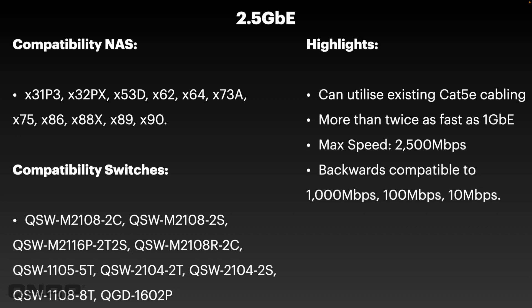One of the best things about 2.5 gig is it can utilize existing Cat5e cabling. So if you were using Cat5e cabling in your office or home infrastructure — embedded in the walls, wired into the sockets with patch panels and things — you don't have to change any of that to use 2.5 gig. You can simply just change your client devices at the ends of the network. For example, on my MacBook Pro I've got a small 2.5 gig USB-C adapter connected into a switch at 2.5 gig for nice, fast transfers. It's an instant more than doubling of your speed for a fairly minimal cost, as the 2.5 gig switches and client cards aren't too expensive.